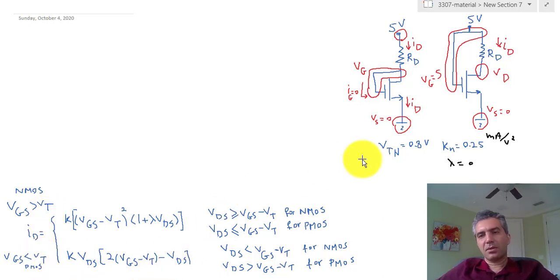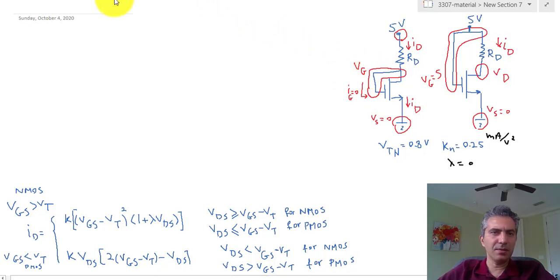Okay, with that let's start analyzing these two circuits. I'm going to start with the circuit to the left. We label the circuit, and this is a specific case - the gate and the drain are connected to each other. I'm just going to call it VG, but really this is VG equal to VD. On top we have 5 volts.